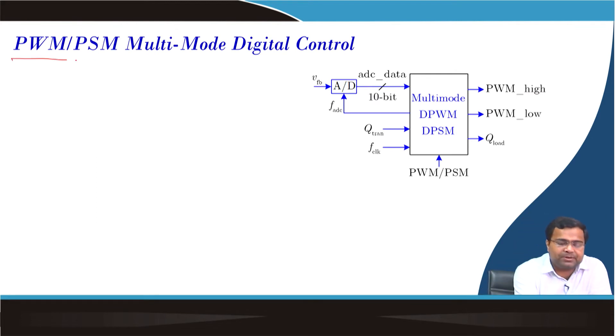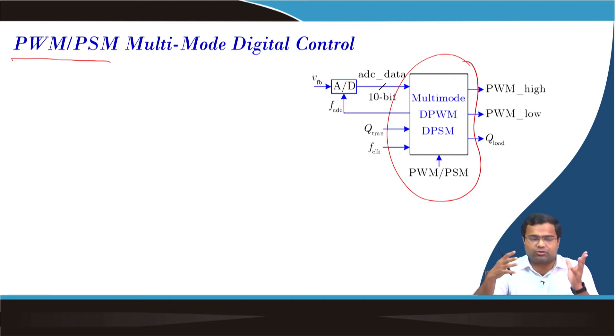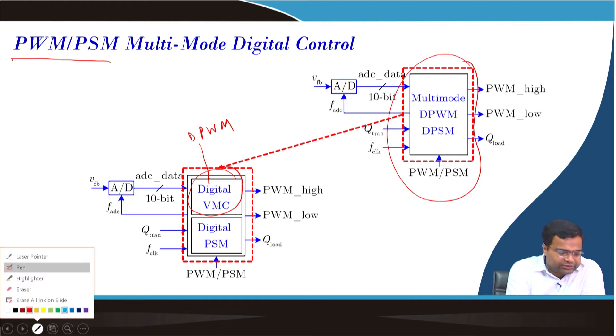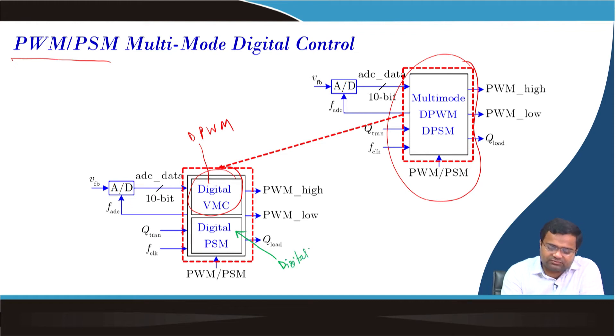Suppose we want to design a PWM-PSM multimode control. This is our overall block, and in the subsequent lecture we are going to consider this multimode control with Verilog implementation program also. But let us take we want to implement this PWM-PSM. If you go inside, then this consists of digital voltage mode, that is your PWM. This is like your PWM-DPWM, and this part is your digital PSM. Both of them will generate a gate signal. That means, digital DPWM will generate Q_PWM, and if it is a digital PSM, DPSM, it is generating Q_PSM.